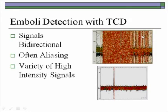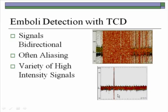In massive embolization you see an almost chaotic type of signal flooding through the area of the MCA, often with aliasing. Or you may have a variety of high intensity transient signals — an occasional chirp or a high intensity hit in the waveform — with the MCA waveform displayed and the hit quite prominent.